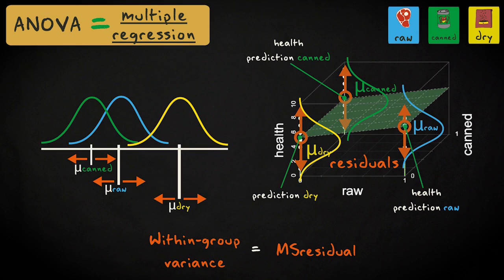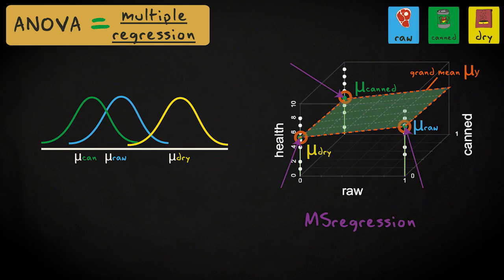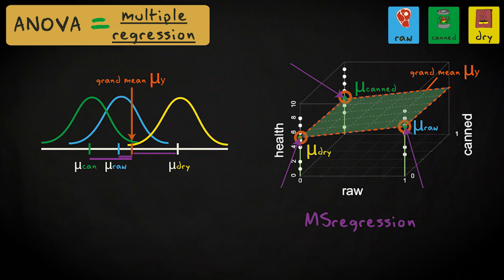So the residual, or error, mean sum of squares in multiple regression is the within-group variance in analysis of variance. The regression mean sum of squares in multiple regression is the variation in the predictions around the mean of the response variable. This corresponds to the variation of the group means around the grand mean in analysis of variance. So the regression mean sum of squares in multiple regression is the between-group variance in analysis of variance.